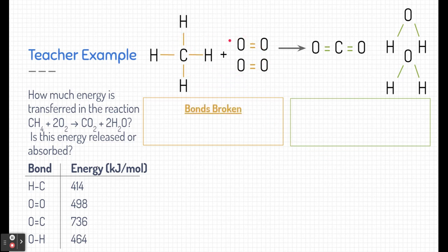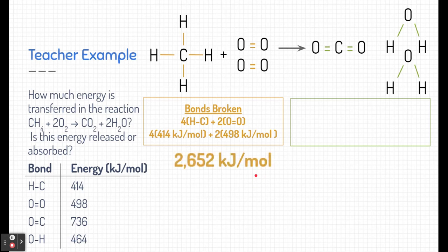Specifically, we want to know what happens when all the bonds are broken in terms of energy. I see here that there are four hydrogen to carbon bonds that we can see in methane and there are two oxygen double bonds as well. If we take a look at our bond energy chart here and we add up all of those bonds, including all the multiples of those bonds, we can determine how much energy it takes to break all of those bonds.